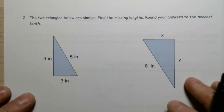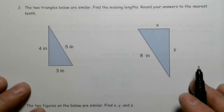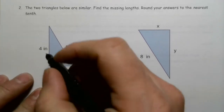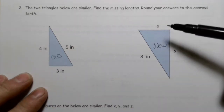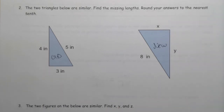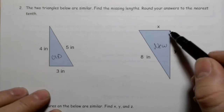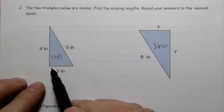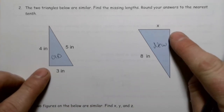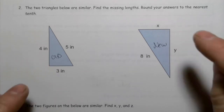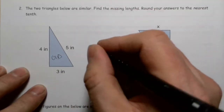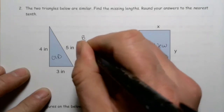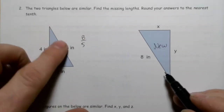The two triangles below are similar — find the missing lengths and round to the nearest tenth. We'll call one the old and one the new. Looking at the angles, both have what appears to be a right angle, so I'm assuming those are the same corresponding angles. That allows me to use the sides opposite those angles: the 5 and the 8 are corresponding sides.